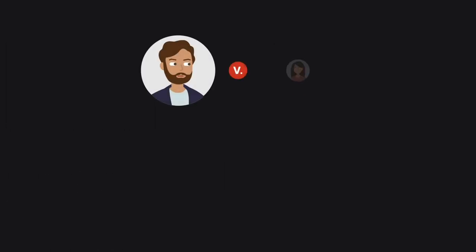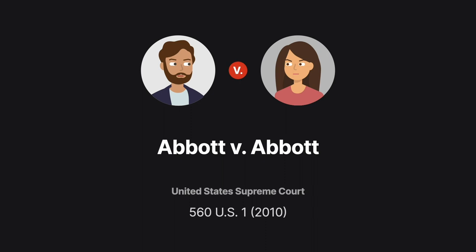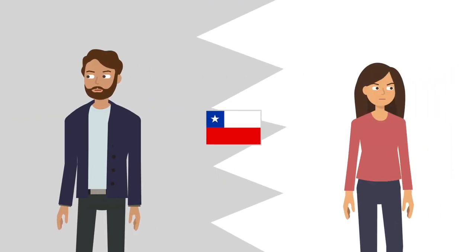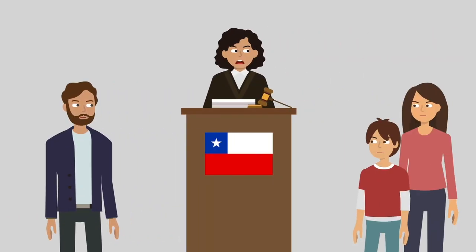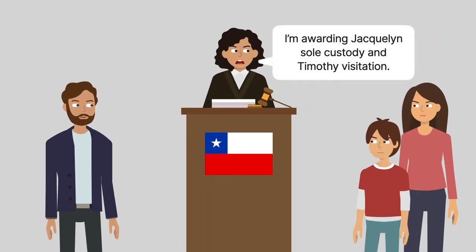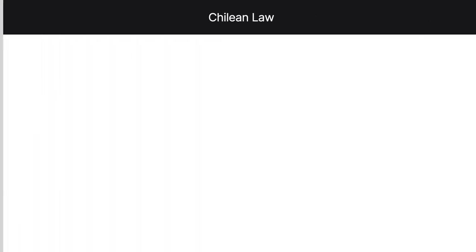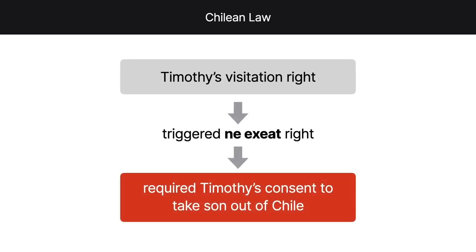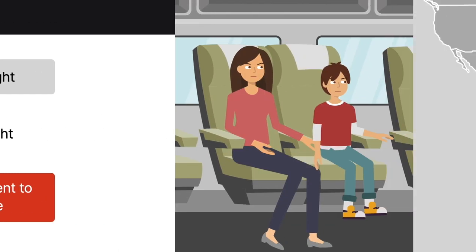In Abbott v. Abbott, we explore the convention's scope. Timothy and Jacqueline Abbott separated while living in Chile. A Chilean court granted Jacqueline sole custody of the couple's minor son and awarded Timothy regular visitation. Under Chilean law, Timothy's visitation right triggered a ne exeat right requiring his consent before Jacqueline could take the son outside Chile.